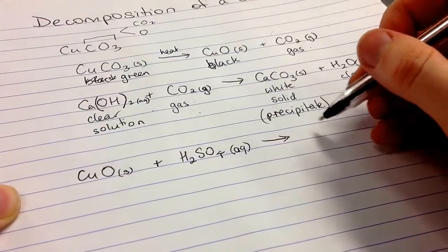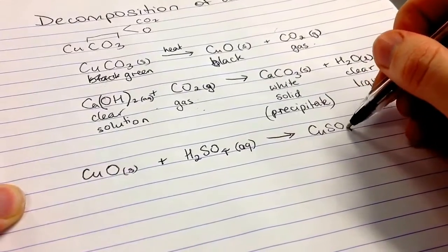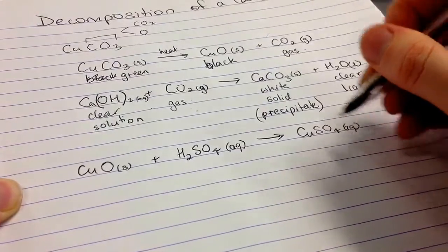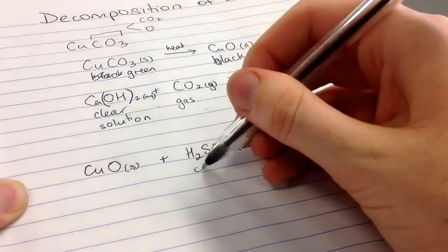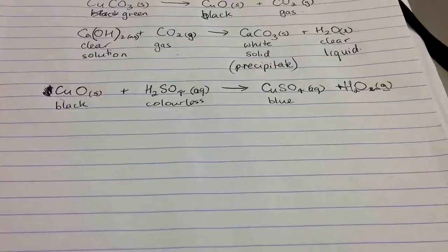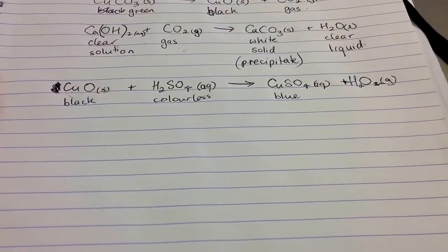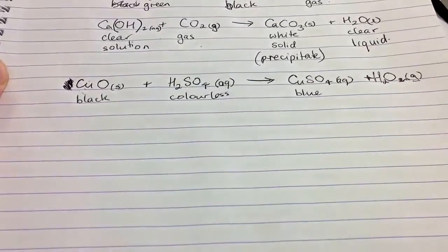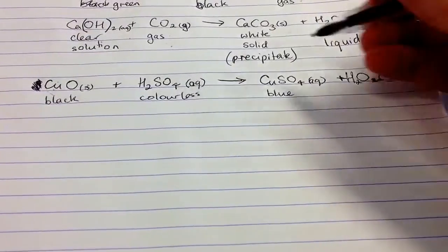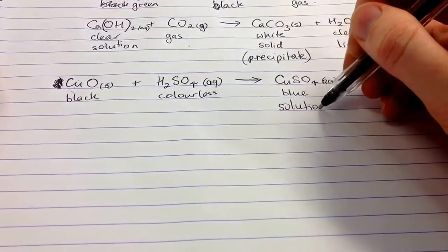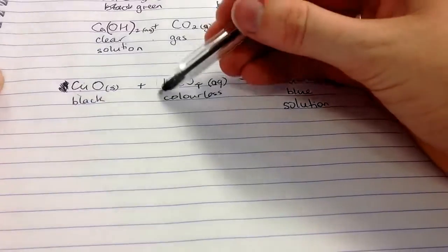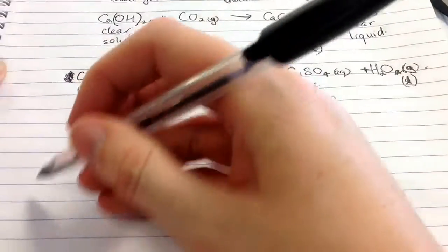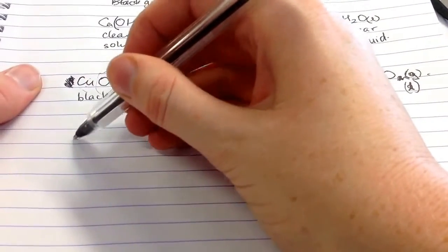When those two reacted together, we ended up producing copper sulfate. And that is a solution. That's a beautiful blue solution. This was colorless. So the second reaction we saw with the copper oxide and sulfuric acid is when we reacted together, we got our copper sulfate, which is a blue solution. And we also got the hydrogen here, combining with the oxygen here and producing water.